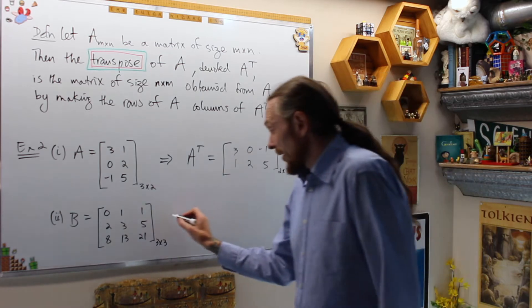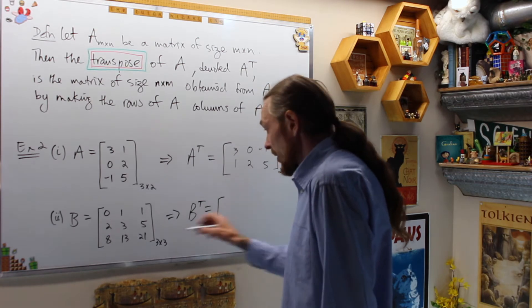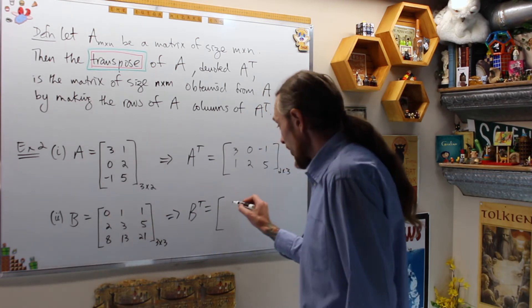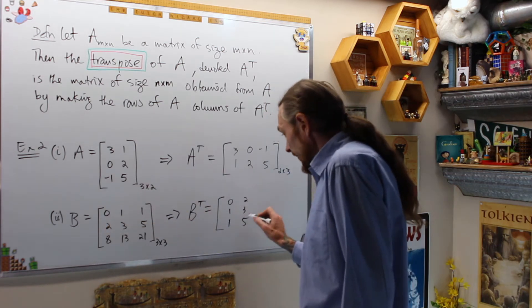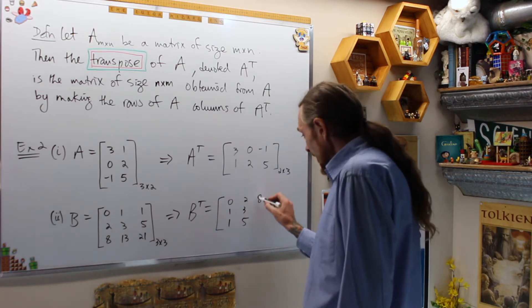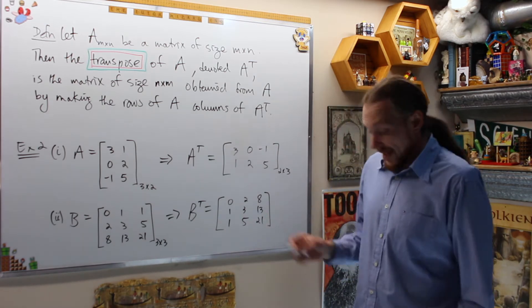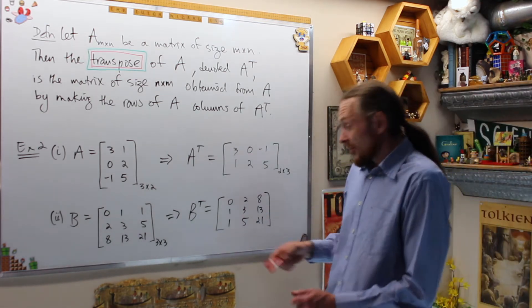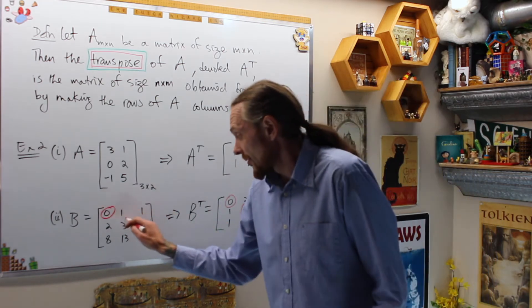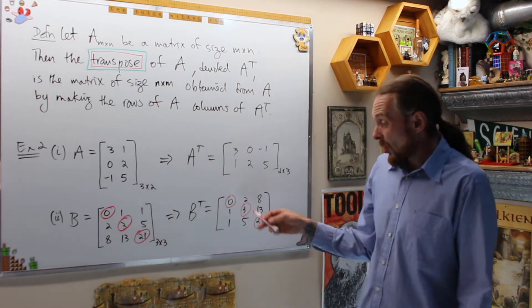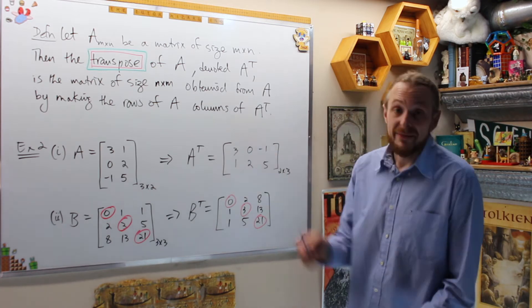Of course, when the matrix is square, B transpose is equal to the first row becomes the first column, 0, 1, 1. The next row becomes the next column, 2, 3, 5 and the last row becomes the last column, 8, 13, 21. These are Fibonacci numbers. What we get is, and the last thing, what we should also notice from this is, 0, 3 and 21 didn't move, the transpose pivots across the main diagonal, therefore sometimes diagonal entries are also called pivots of a matrix.